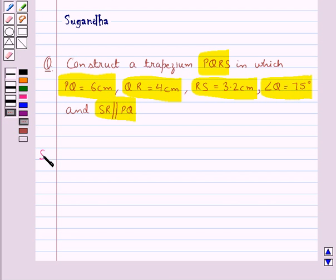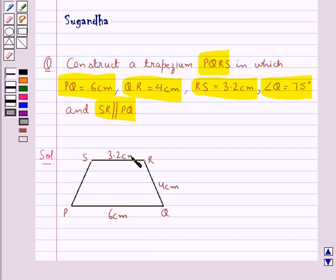Let's proceed with the construction. Before making the actual trapezium PQRS, first let's construct the rough sketch of the trapezium PQRS. This is the trapezium PQRS where we have PQ is equal to 6 cm, QR is equal to 4 cm, RS is equal to 3.2 cm, angle Q is 75 degrees and we have that SR is parallel to PQ.